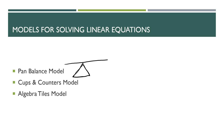Think of this as a balance, where you have each side where you're going to be stacking your objects. Your goal here is to keep the scale in balance. The next model is the cups and counters model — this is a super accessible option.